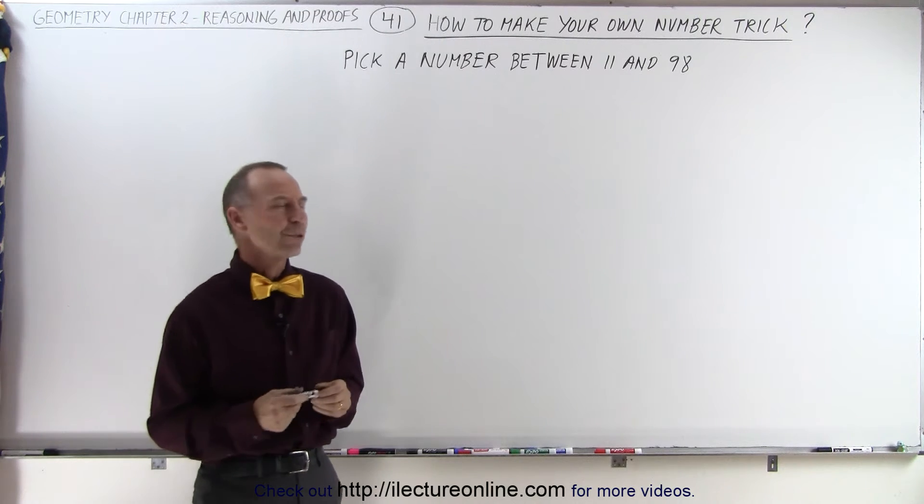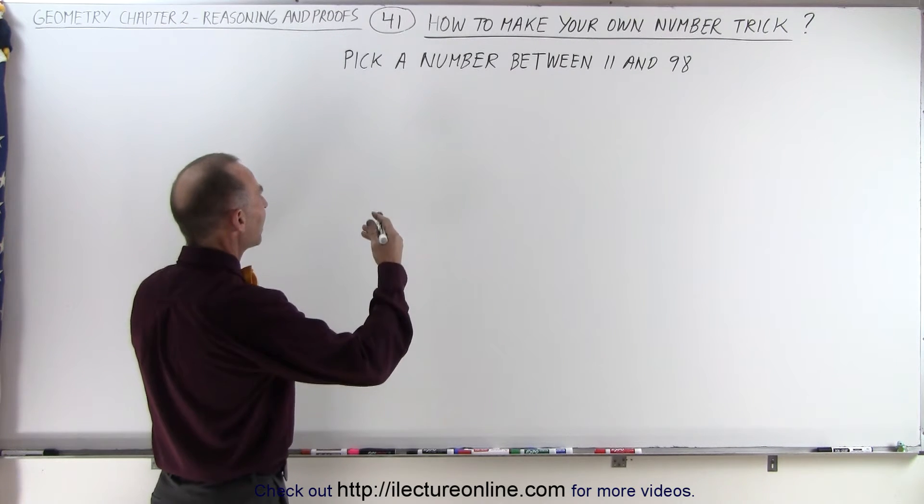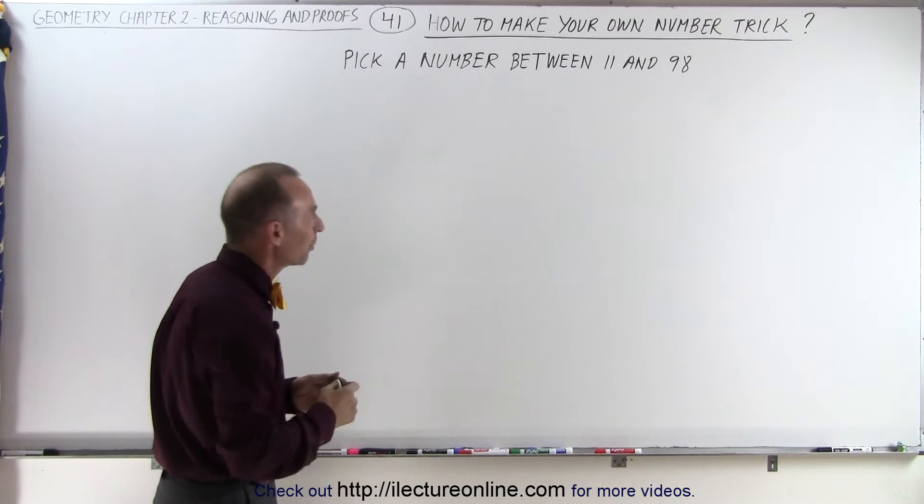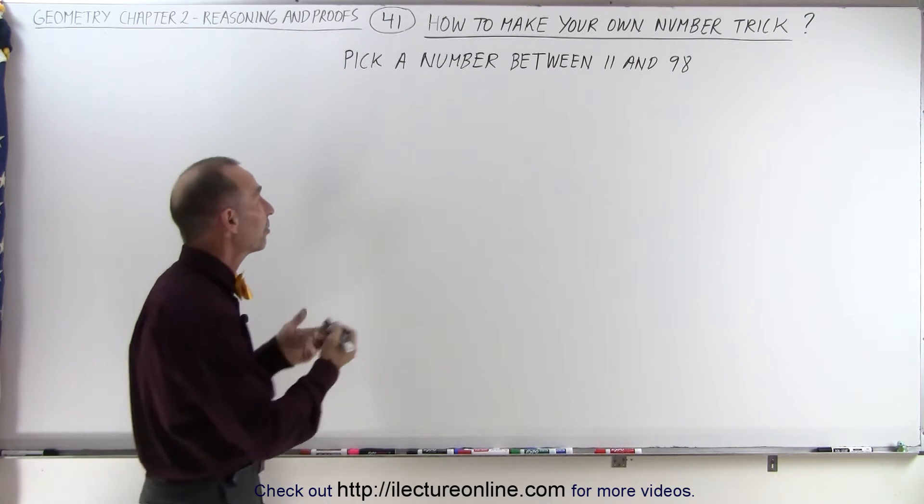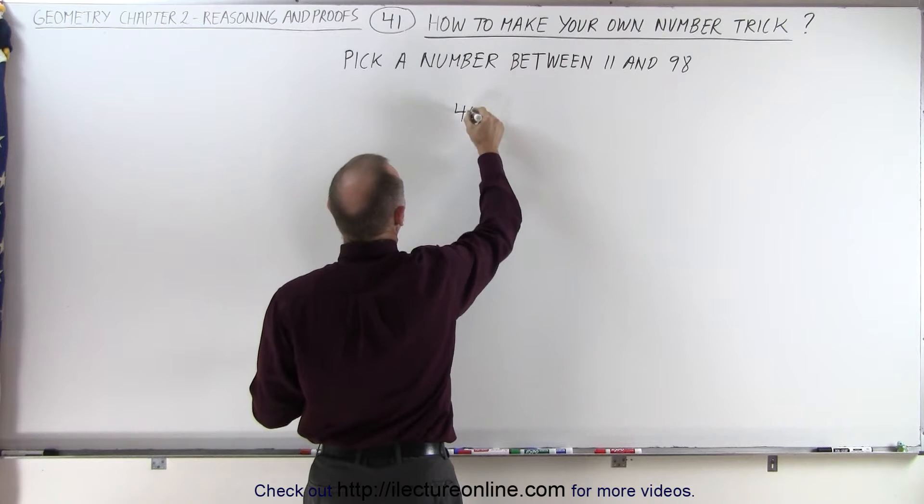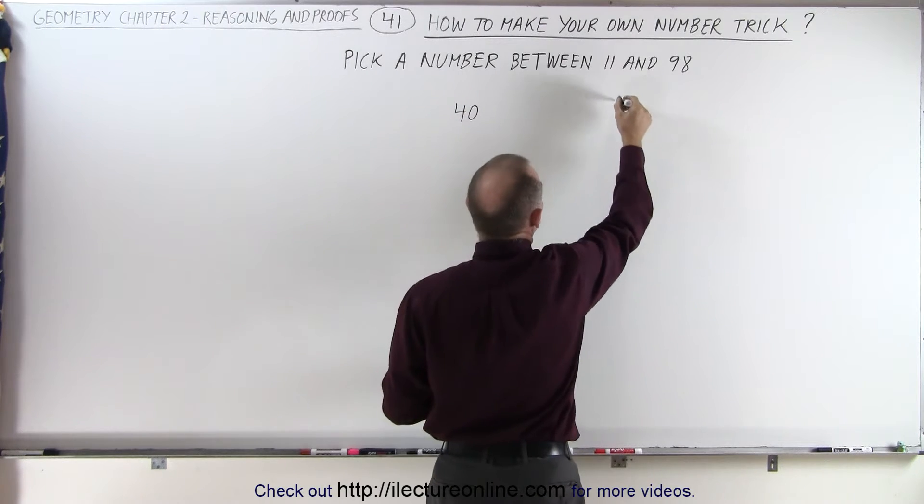How do you do that? Well, this is how you do it. Let's again say that you ask to pick a number between 11 and 99, so let's say we pick the number 40, and at the same time let's pick the number x.